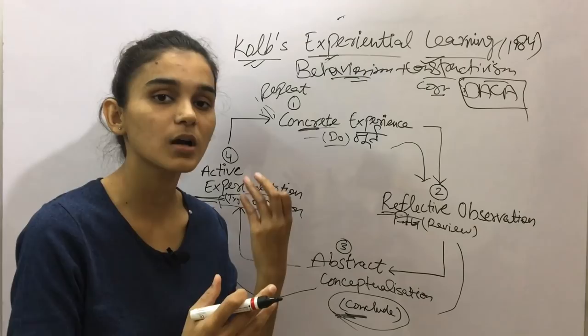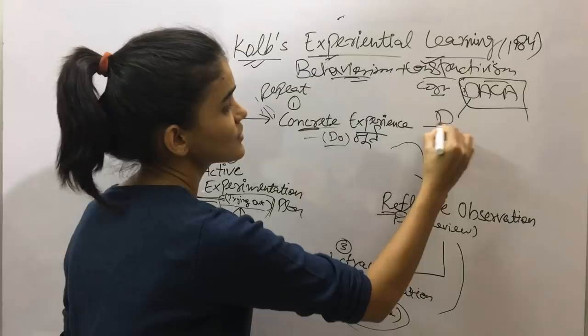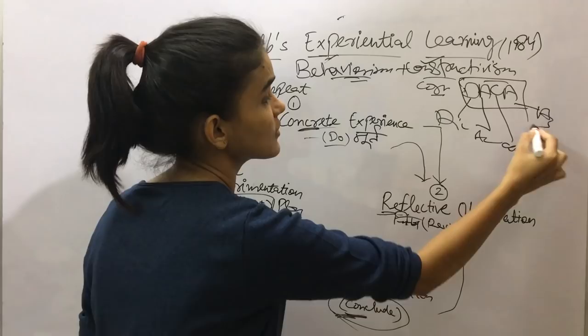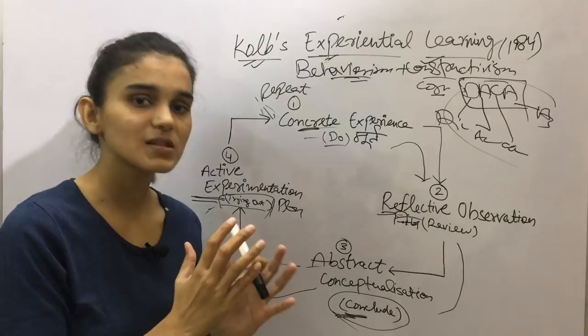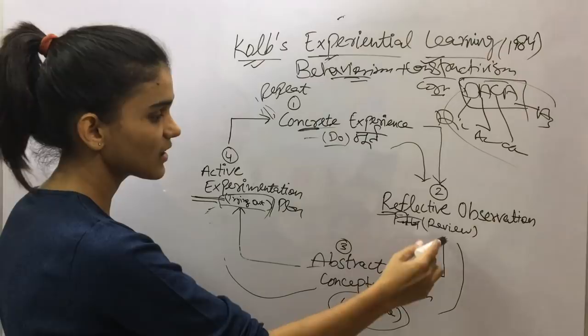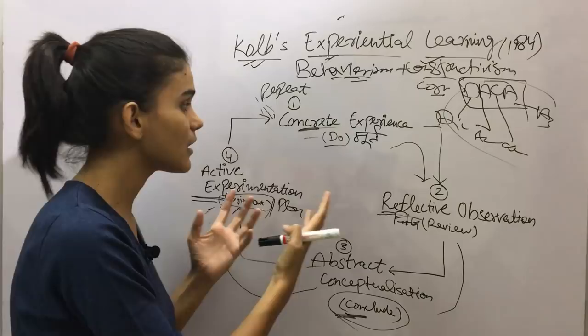The next part will cover DECA — the four learning styles. Kolb says that while the learning cycle is the same for everyone, the learning style is not. Basically, you take experience and transform it differently based on your style. DECA stands for: Divergers, Accommodators, Convergers, and Assimilators. We will study these four types in the next video. Questions like which process a Diverger uses — Reflective Observation or Active Experimentation — will be answered then.